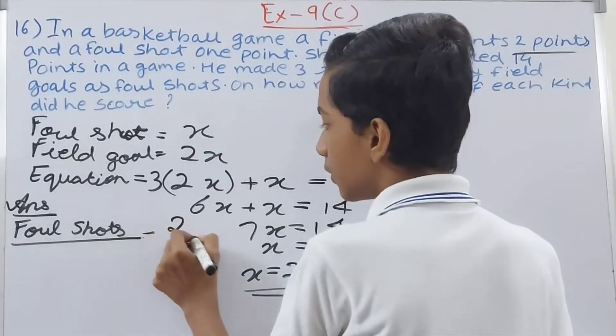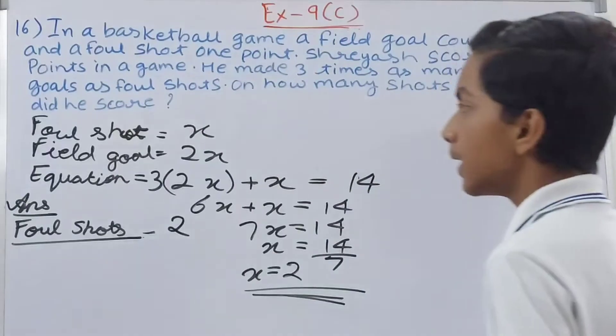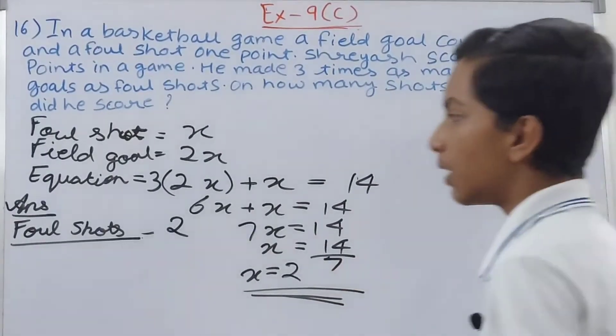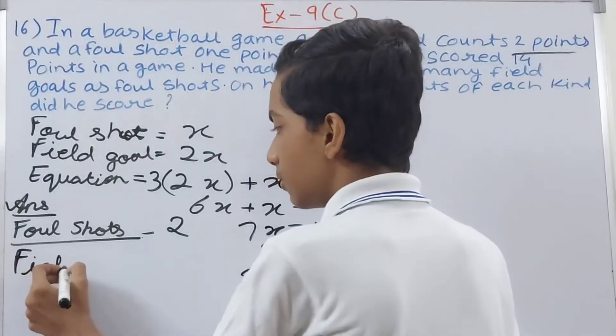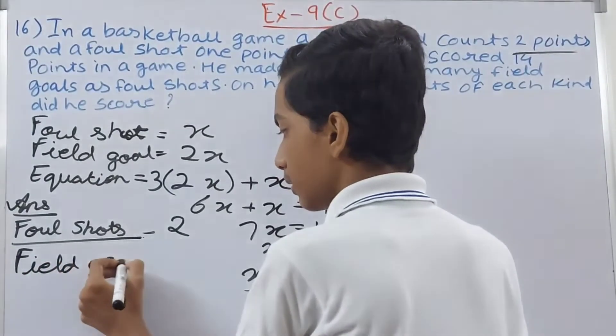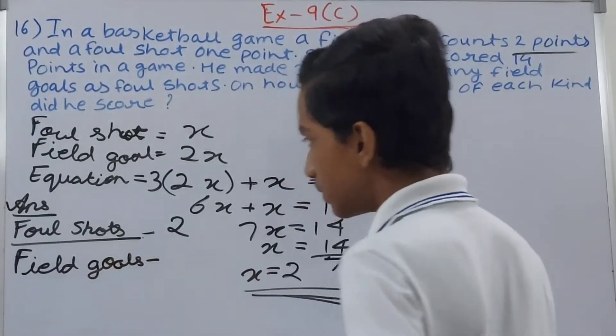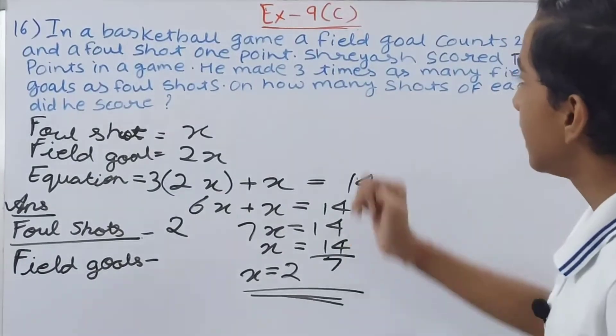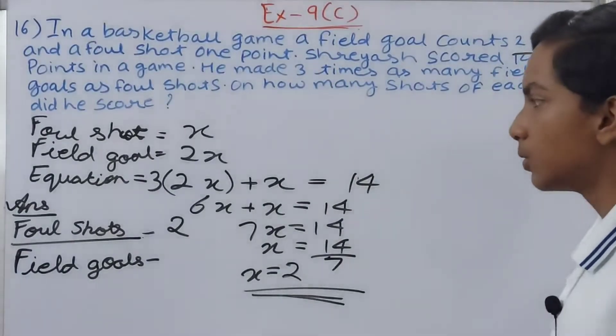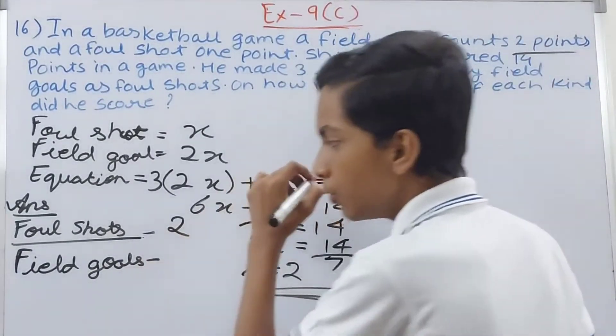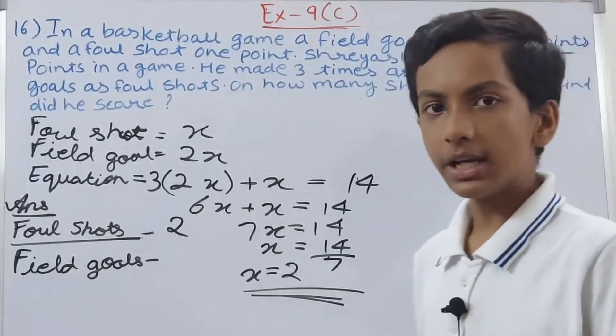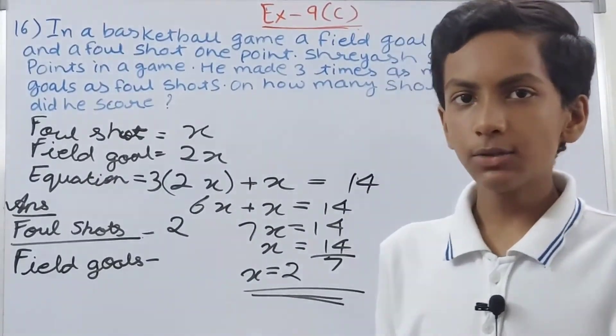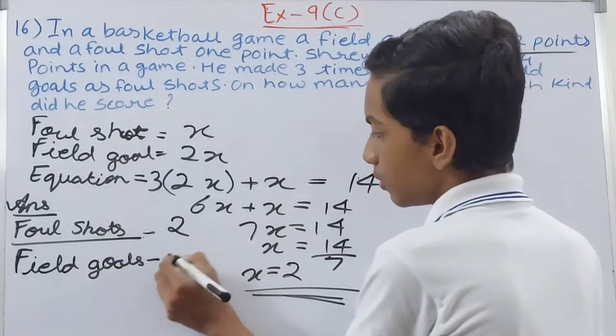Now for field goals, it says he made three times as many field goals as foul shots. He made 2 foul shots, so three times 2 equals 6. So he scored 6 field goals.